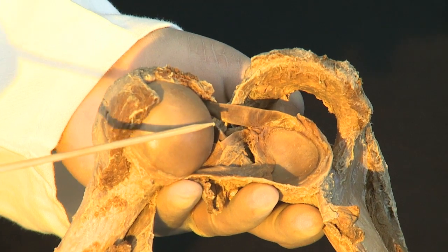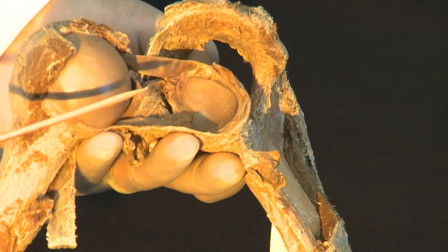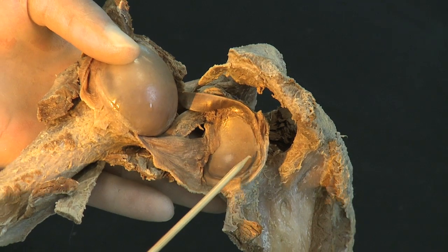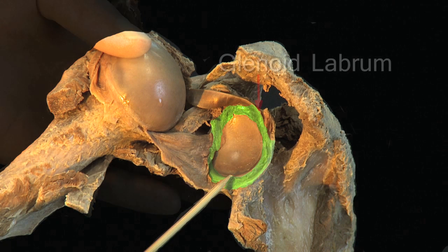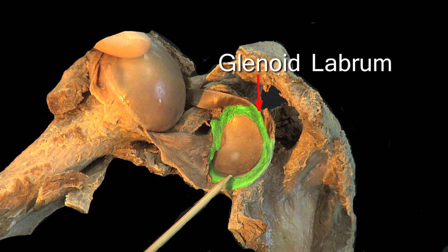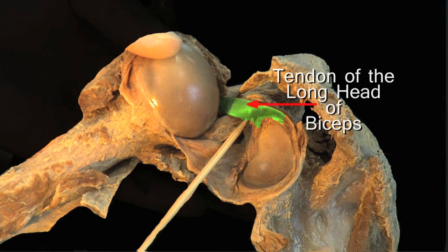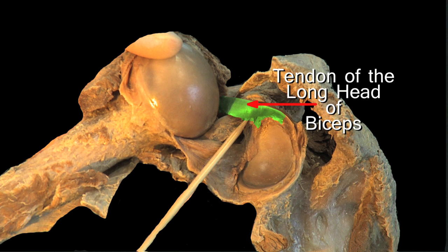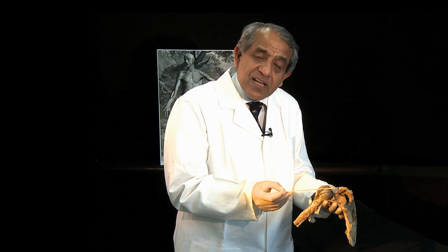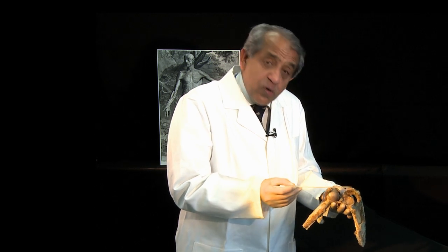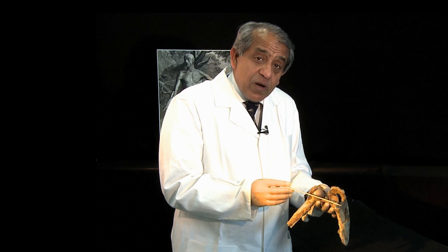You might expect this joint to be very unstable — a great big head articulating with a fairly small glenoid area. However, there are quite a number of stabilizing factors, and the shoulder joint is in fact quite a stable joint. One factor is this rim of fibrocartilage called the glenoid labrum, which serves to widen and deepen the glenoid area. Arising from the upper aspect of the glenoid labrum within the capsule is the tendon of the long head of biceps. All in all, the glenohumeral articulation is quite a stable joint.